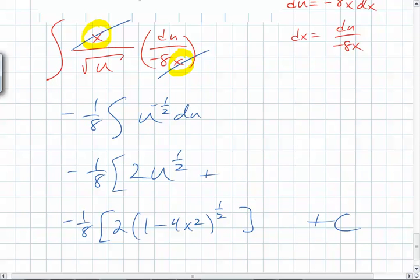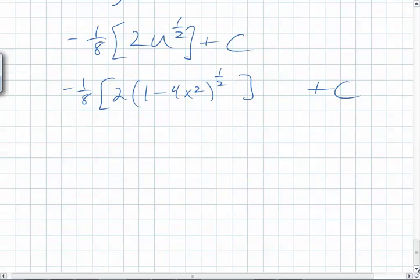And you can put the plus c on the outside. That's totally fine. So what does it simplify to? Negative 1 fourth, 1 minus 4x squared to the 1 half plus c.